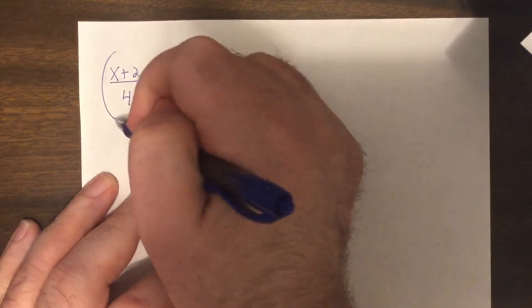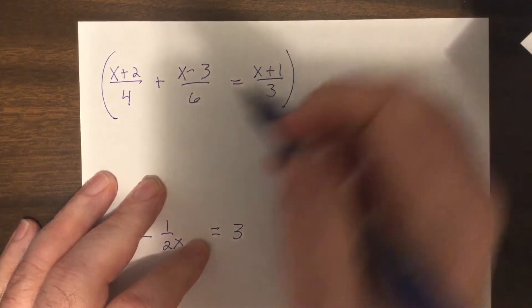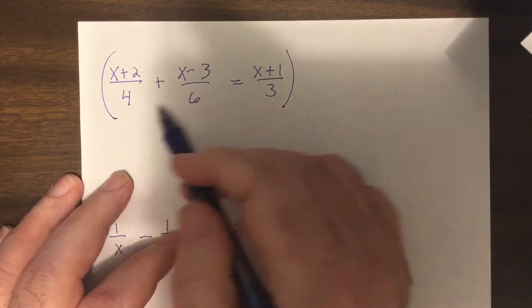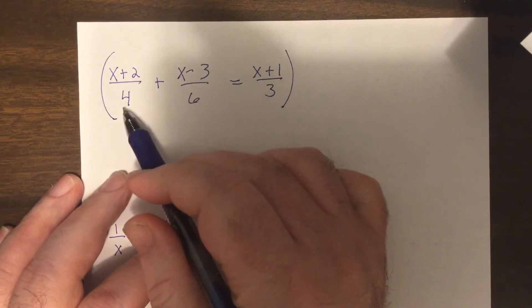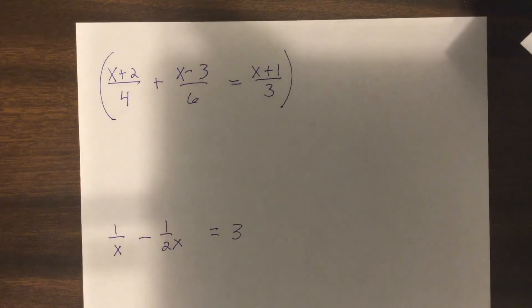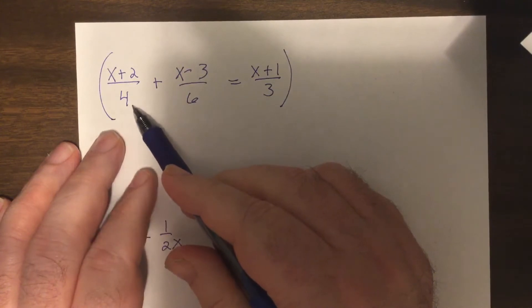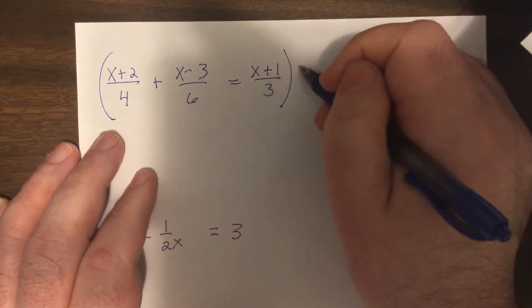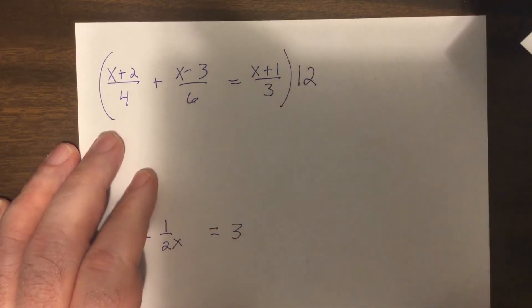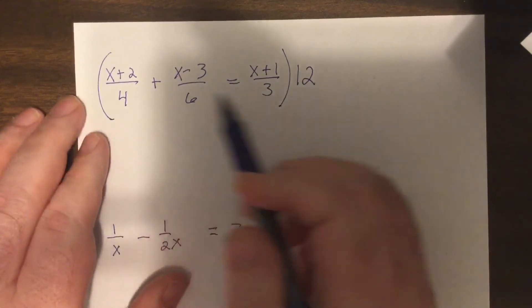You would say okay, one way to do it is to get all the same denominators and then get the x to one side, numbers on the other. Or you can say let's get rid of the denominators, so you could find the LCD which is 12 and multiply everything by 12.